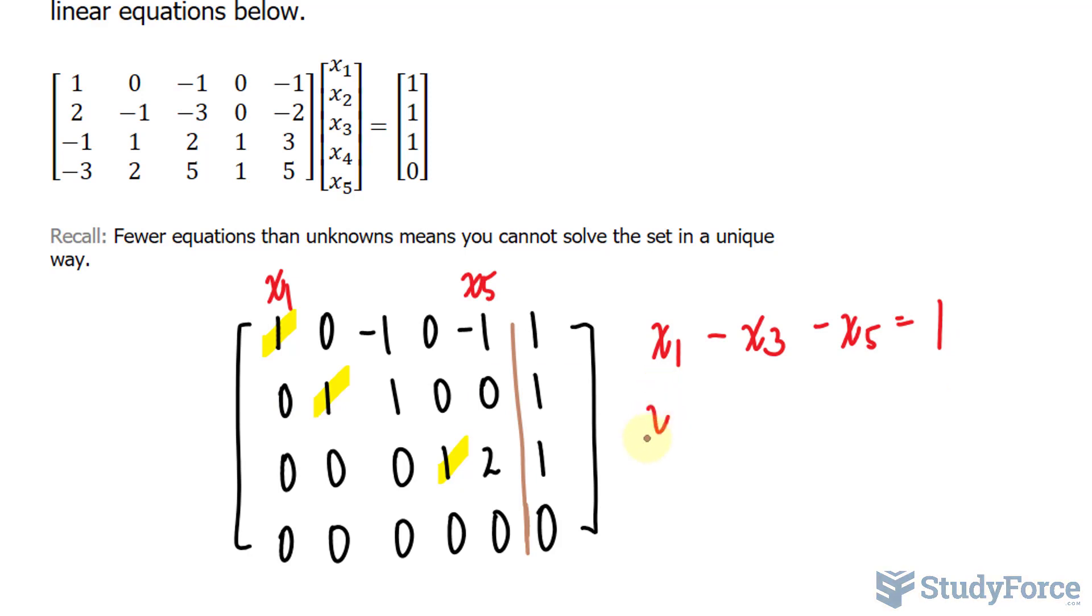Again, over here we have x sub two plus x sub three. That's also equal to one. And over here, x sub four plus two times x sub five is equal to one. Wherever you do have a leading one, you want to solve the equation for that variable.